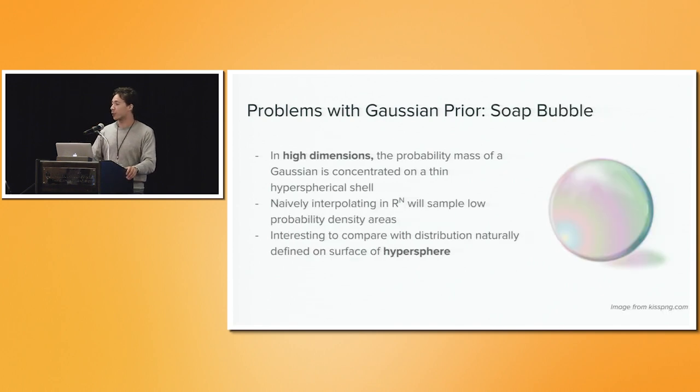Additionally, also in higher dimensions, you get some unexpected behavior with Gaussians. In higher dimensions, a Gaussian starts to behave kind of like a soap bubble, where most of the probability mass increasingly starts to be concentrated on a thin shell of a hypersphere. It's not completely obvious what happens at that point when you try to draw samples or try to interpolate.